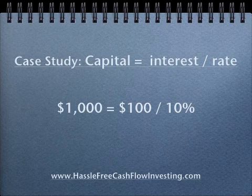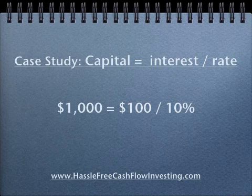Using this example, we understand what the amount of interest is and what the rate is, but we need to figure out how much principal we need to achieve this. This is a great formula if you're working with a monthly budget. If you need to achieve $100 a year of income and you have investment opportunities paying 10%, how much money do you need to invest? You would solve backwards — interest divided by rate — and you get $1,000.